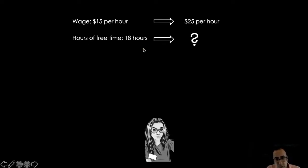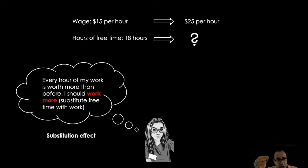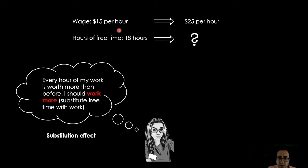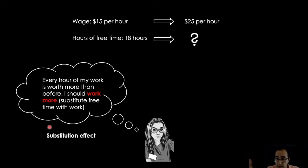This increase in wages puts Sarah in an interesting economic dilemma. On the one hand, she starts to think: every hour of my work is now worth more than before. Previously, if I didn't work, I would lose $15 per hour. Now, I would lose $25 per hour. So I should work more and substitute free time for work. We call this the substitution effect.